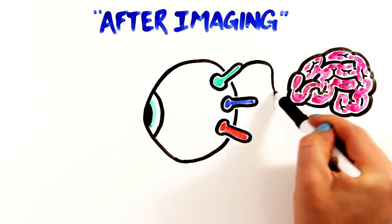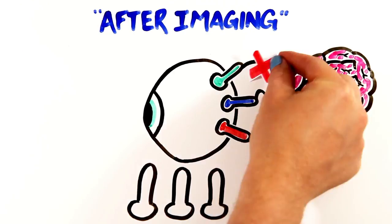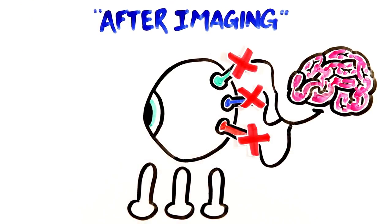After staring long enough at the brightly colored image, your cones slowly become fatigued and the supply of photopigment in the respective cones becomes exhausted, which ultimately stops sending signals to the brain. In the case of this illusion,